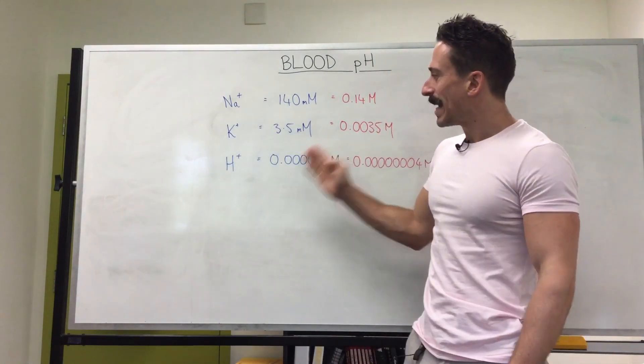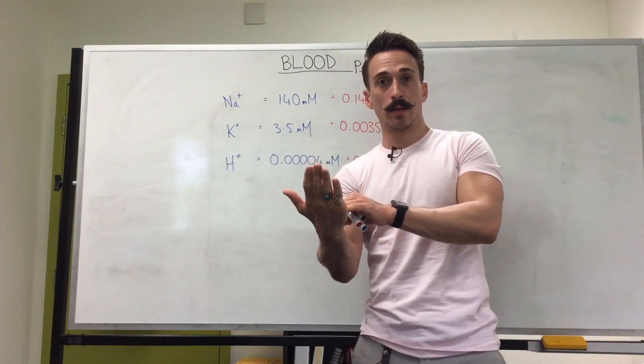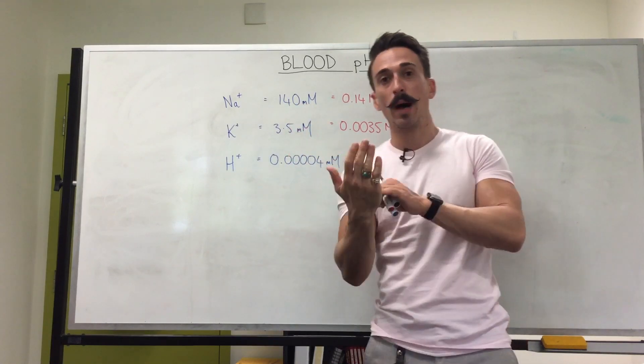Now what you can see here is that the hydrogen ion concentration is extremely low. When you get a blood reading, so blood measurement, you're gonna have these concentrations pop up.